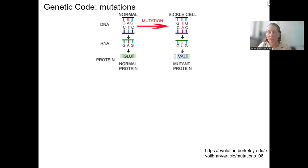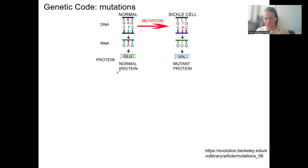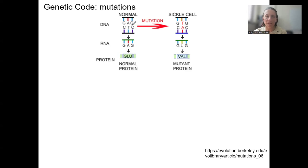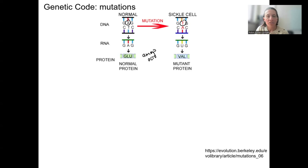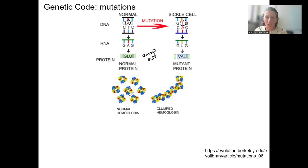If we have a mutation in the DNA, that's going to change the protein that's made. Mutations can be silent, meaning they don't have an effect, for various reasons. But sickle cell anemia is an example where a single mutation results in a different phenotype. If you have a single base mutation — so an A is changed to a T — that's going to result in a different amino acid. Glutamate is now valine, and those have different chemical properties, so when they come together to form the protein, it forms differently.